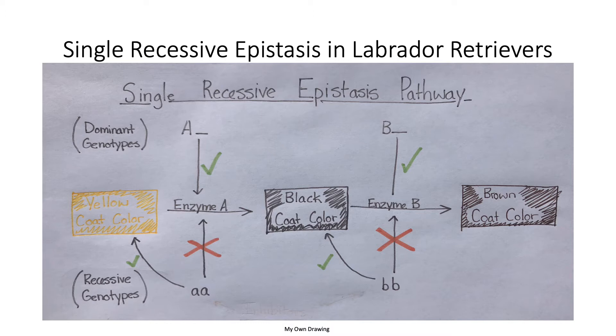In the following pathway, the letter A is to represent the yellow coat color gene, the letter B is to represent the black coat color gene, the capitalized letter will be representing the dominant allele, and the lowercase letter will be representing the recessive allele.